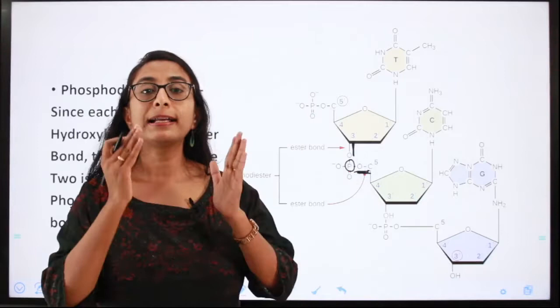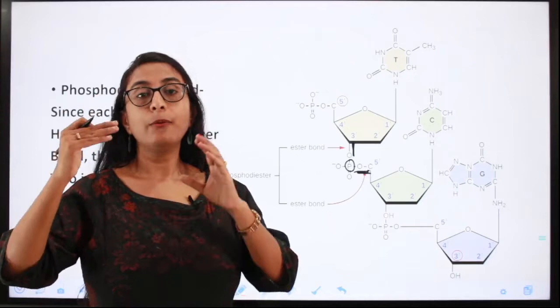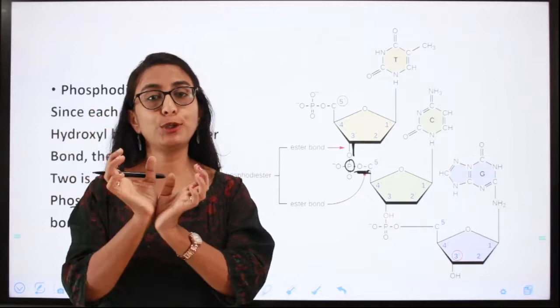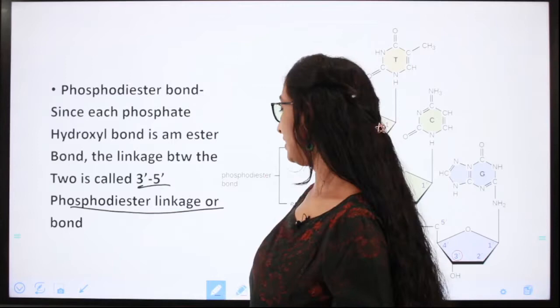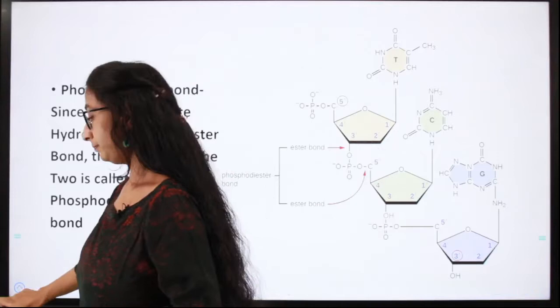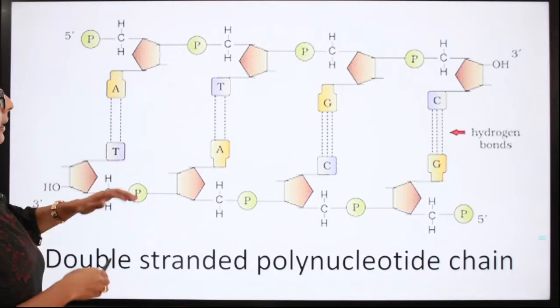The glycosidic bond is the bond between a pentosugar and a nitrogenous base, whereas the phosphodiester bond is the bond that connects two adjacent nucleotides. Both are formed by condensation reaction involving elimination of water. These are the two important bonds in the DNA structure.